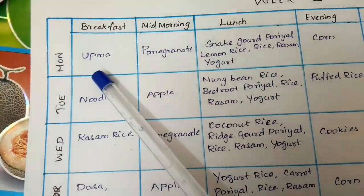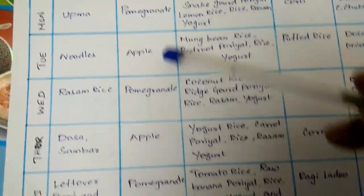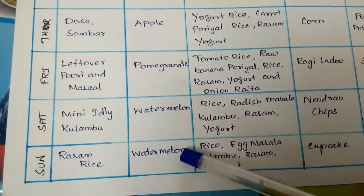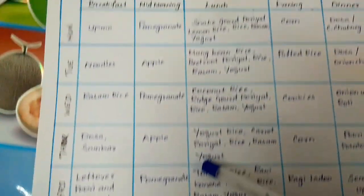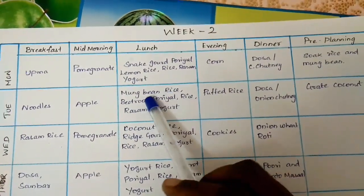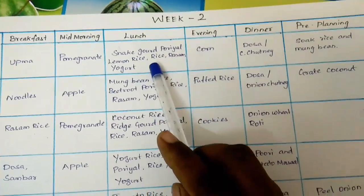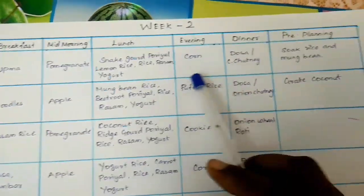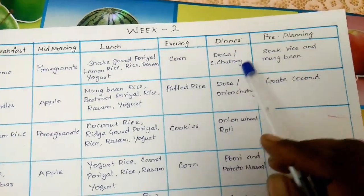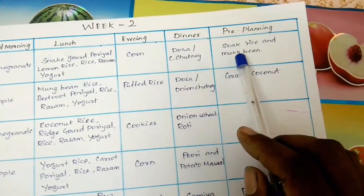On Monday morning, you can choose a pomegranate apple. We have water in the weekend. Then on Monday, we have lemon rice. Lemon rice is also made as usual rice. Even though it is important for the evening — Dosa and Tenga Chutney — if you want to make it as well, it will be made.